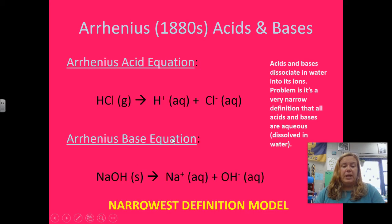And in an Arrhenius base, what would happen is the base would break down into its ions, being Na+ and OH-, and it would break down into water as you see the aqueous. The problem with this is the acids and bases dissociate in water into its ions. That means that it's a very narrow definition, and it also means that all acids and bases are aqueous, which is not entirely true.